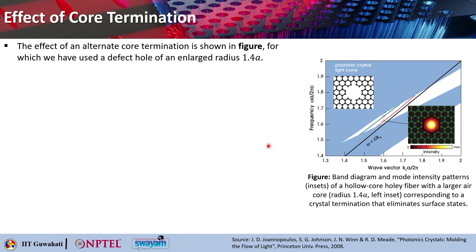Now we will see that if we try to change the core termination, this is an alternate core termination which is shown in this figure. Here you can see this air core is basically terminated not along the lines of the air holes, but it is slightly larger. The defect hole has been now enlarged to a radius of 1.4a.